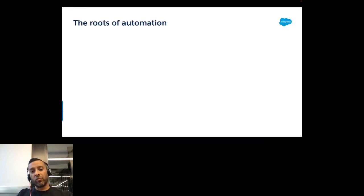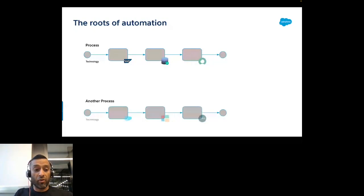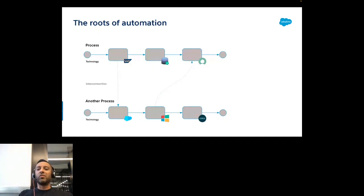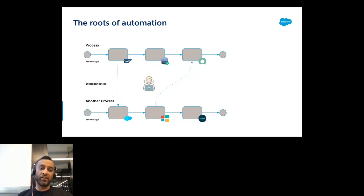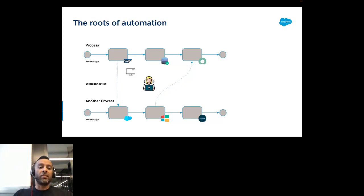Let's see how RPA became what it is. Organizations have multiple processes implemented using different technologies, and sometimes there's a need to interconnect them. System integration solves these challenges, but many smaller organizations don't have the skill set or willingness to invest in it. So the easiest approach is having someone who understands the business processes — working daily in Salesforce, Microsoft, ServiceNow — to handle the interconnection manually.